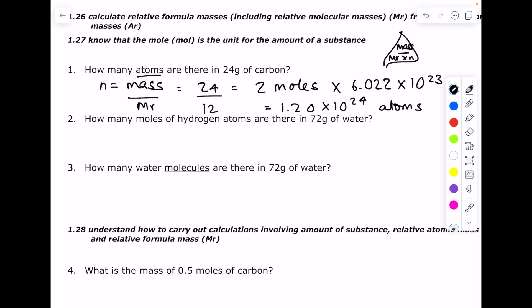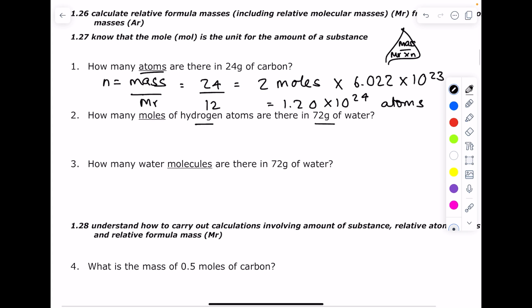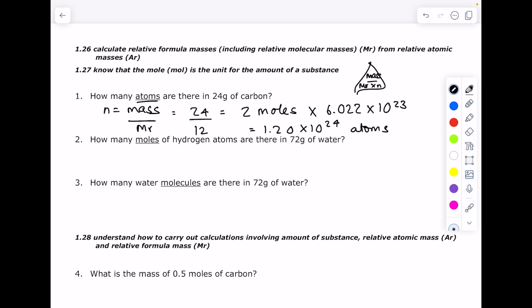How many moles of hydrogen atoms are there in 72 grams of water? So first of all we need to find the number of moles of water by doing mass divided by MR. The mass we've been told is 72. The MR of water—well it's H2O so that's 18. So that tells us that we have 4 moles.